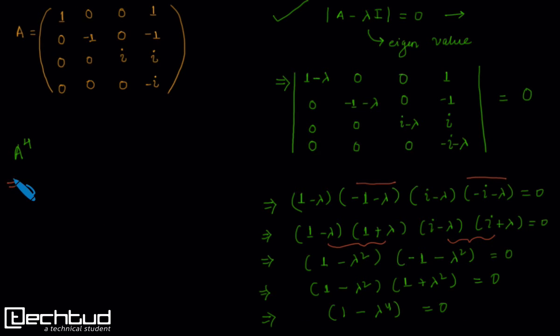Therefore the characteristic equation obtained by solving all this is lambda to the power 4 equals 1. Now by applying Cayley-Hamilton theorem we know that the matrix A will satisfy this characteristic equation. Therefore A to the power 4 equals the identity matrix.